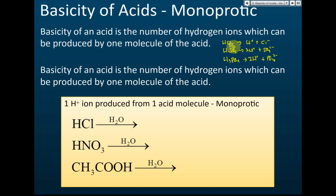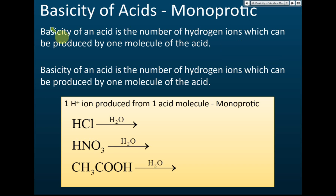How many hydrogen ions are produced when one acid molecule dissolves in water determines the basicity. If just one hydrogen is produced, we call it monoprotic. If two hydrogen ions are produced, it's diprotic. If three hydrogen ions are produced, it's triprotic. So basicity of an acid is the number of hydrogen ions which can be produced by one molecule of the acid.